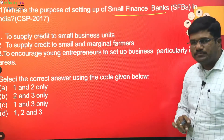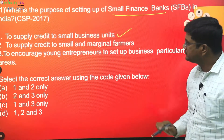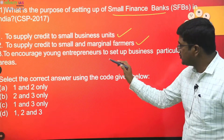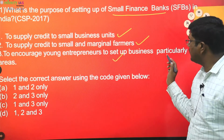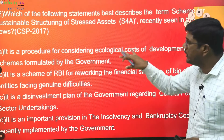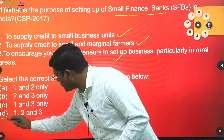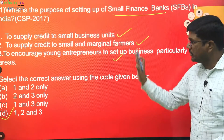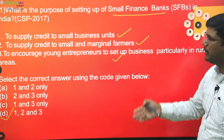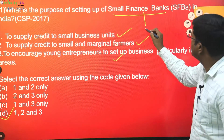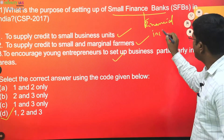Next: what is the purpose of setting up Small Finance Banks? Statement one — to supply credit to small business units — correct. Statement two — to supply credit to small and marginal farmers — also right. Statement three — to encourage young entrepreneurs to set up business, particularly in rural areas — correct, and it does not restrict to only rural areas. No extreme words, very simple informative statements, so all statements are correct. Small Finance Banks are the latest development for financial inclusion, along with payment banks.